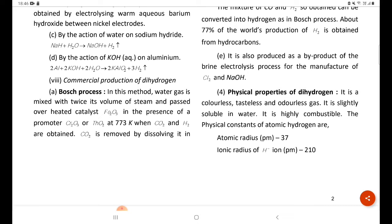Slightly soluble in water and highly combustible. The physical constants of atomic hydrogen are: atomic radius 37, ionic radius of H-ion 210 PM.